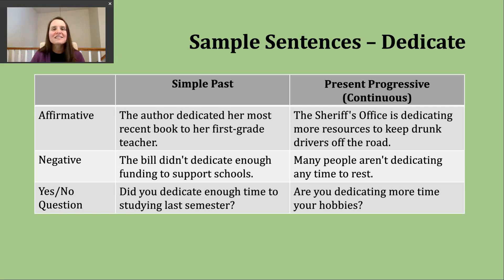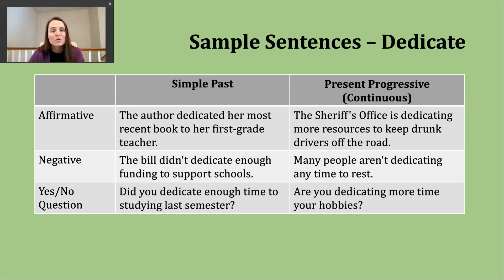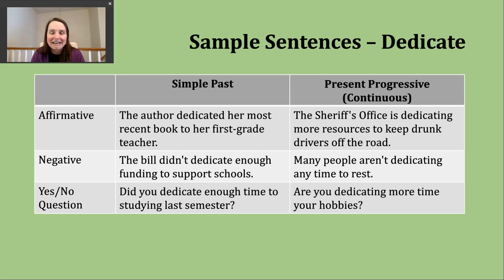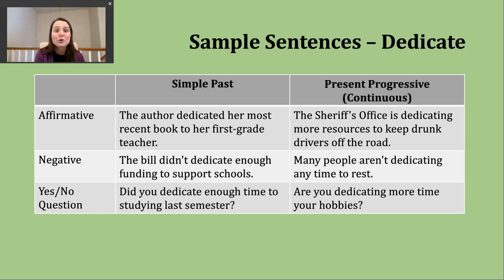For the simple past negative, the structure is the same regardless of subject: subject + 'did not' + base verb. Example: 'The bill didn't dedicate enough funding to support schools.' This goes back to the second definition — setting apart or aside — and is criticizing some legislation for not setting aside enough money to assist schools.